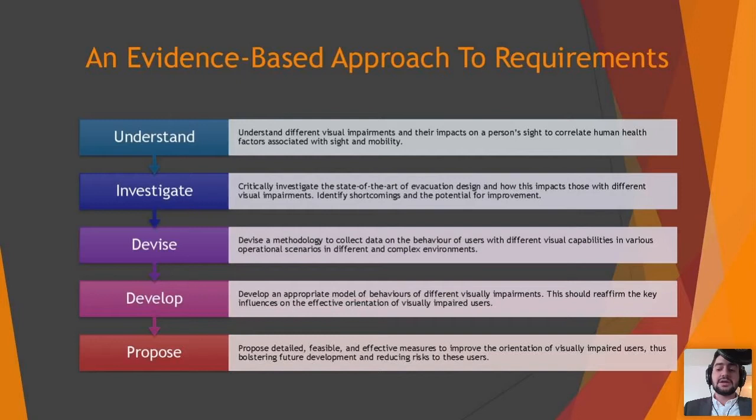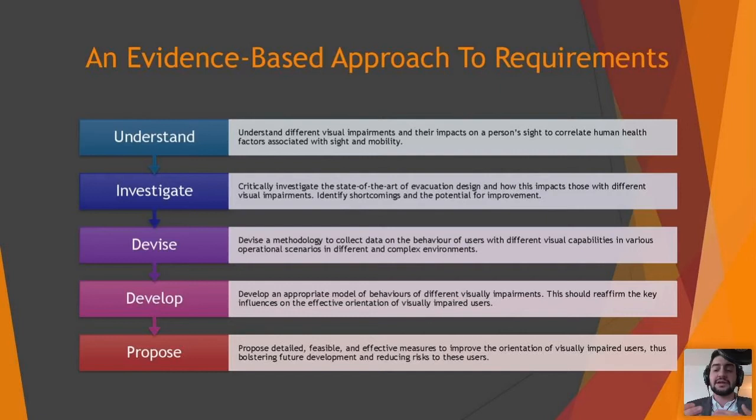Before we begin to tackle the topic of requirements, we have to establish a fundamental understanding of visual impairment at the biological level. This systematic approach includes a biological review, but we also have to look at gaps in the literature — how engineering currently considers visual impairment and comparing this to medical research. What you end up finding is that on the engineering side, a lot of the finer details of visual impairment tend to be missed out. In medical research, there's amazing work done on the eye, but not enough on how architecture and the urban environment can help visually impaired people. So we have to marry those two worlds.